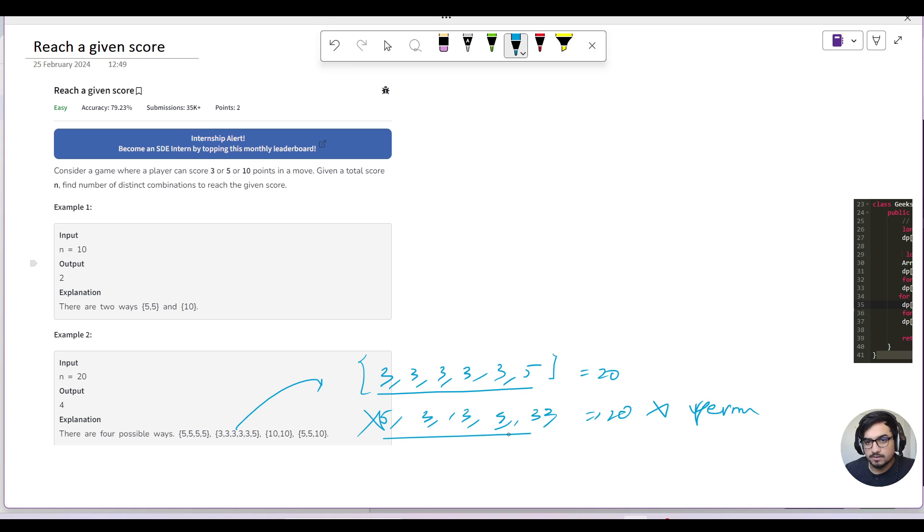So that is why we will ignore this case. Now having this in mind, definitely we have a recursion to use here. It is about possibilities to explore, but having this thing in mind that we cannot have a permutation. So let's say we have a function of n. At the first stage we will make a call for function of n-3, we will make a call for function of n-5, and then we'll make a call for function of n-10.